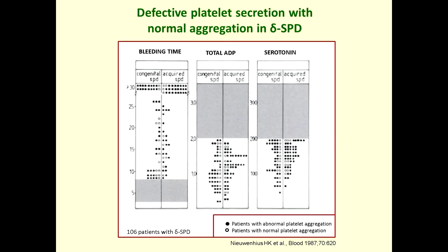Although light transmission aggregometry is very useful and informative, there are conditions in which platelet secretion may be defective with normal aggregation. A study of 106 patients with delta storage pool deficiency showed that despite prolonged bleeding time and clearly reduced dense granule content of ADP and serotonin, in several patients platelet aggregation by light transmission aggregometry was absolutely normal. This means it is very important to also study platelet secretion.